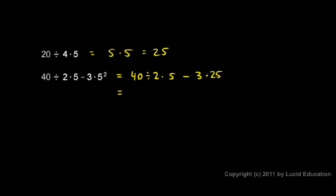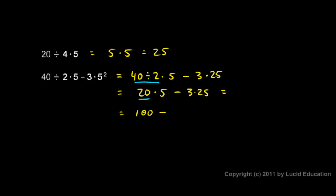Now I do the multiplication and division left to right. 40 divided by 2 is 20, so this becomes 20 times 5 minus 3 times 25. Then 20 times 5 is 100, and 3 times 25 is 75. So 100 minus 75 is 25. I've evaluated this expression using the rules for the order of operations: exponents first, then multiplication and division left to right, then addition and subtraction left to right.